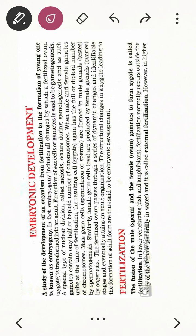Embryogenesis covers all changes by which a fertilized ovum is transformed into an adult — from the very first stage, the fertilized ovum, to the formation of an adult. The formation of sex cells or gametes is called gametogenesis, which we have already studied earlier.